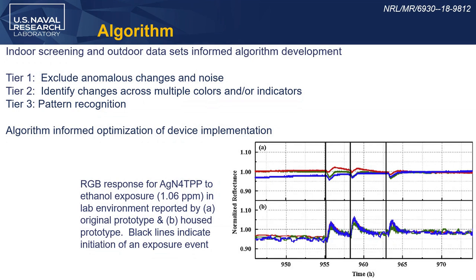We're using a 120-point background window, so it takes basically an hour to populate it. That first background window is used to fix threshold values — essentially, how sensitive the response is going to be. We do this background window every time because each color chip varies in its response characteristics, and each set of six color chips and each porphyrin indicator gives different variabilities. By using a background window collected for each specific indicator on each specific chip, we get much better control over false responses.